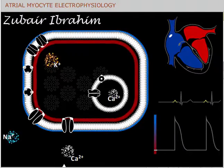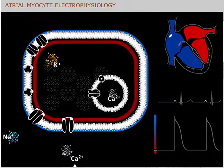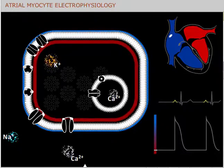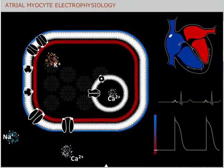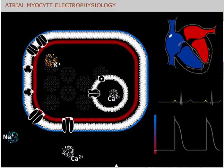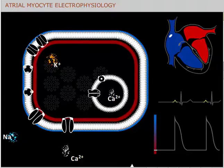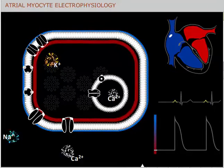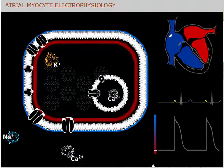This animation will review the electrophysiology of atrial myocytes with a focus on the ion channels that are the primary targets of drugs used to treat arrhythmias. Ions move across cell membranes through specific ion channels, by way of exchangers, and by transporters that pump ions against electrical and concentration gradients.